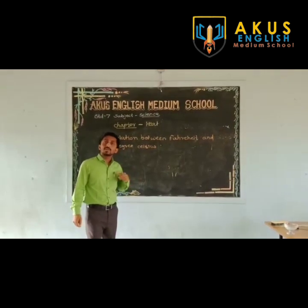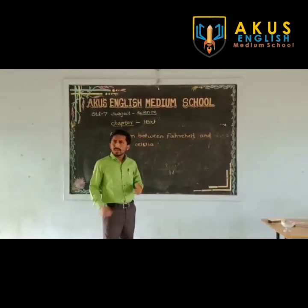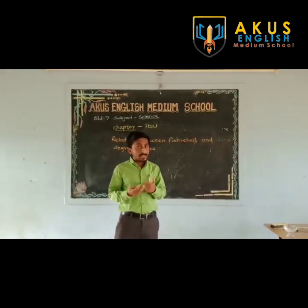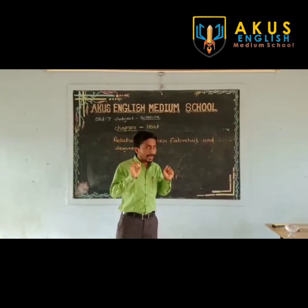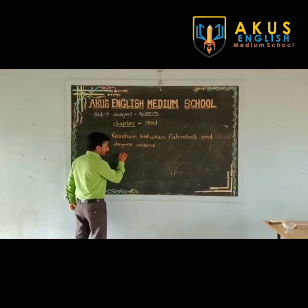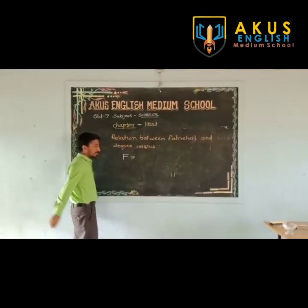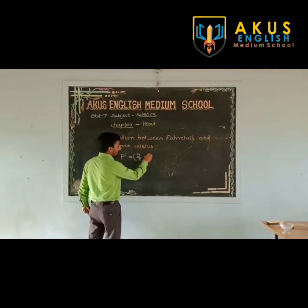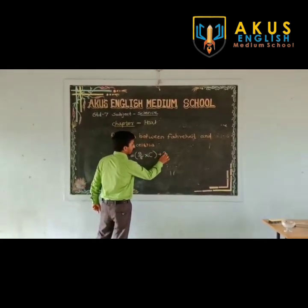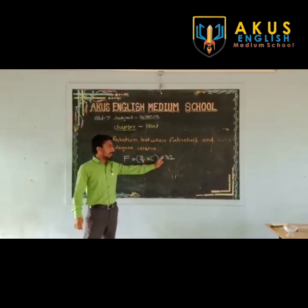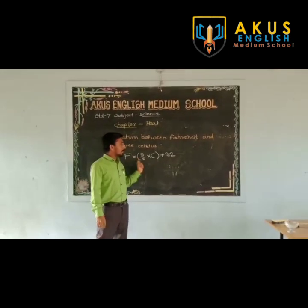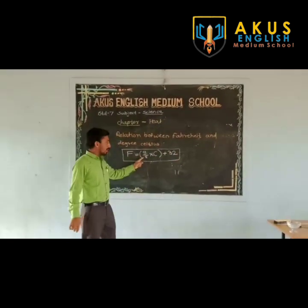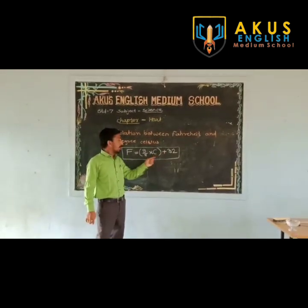The SI unit of temperature is Kelvin, and the other two scales are Celsius and degree Fahrenheit. There is a relation between degree Celsius and Fahrenheit. If temperature is given in degree Celsius and you want to convert it to degree Fahrenheit, keep in mind the relation: temperature in Fahrenheit is equal to 9 by 5 into temperature in degree Celsius plus 32. So F equals 9/5 × C plus 32.